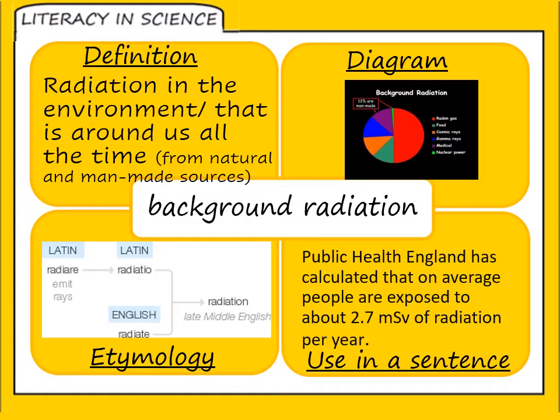As a definition, background radiation is the radiation found in the environment — radiation that is around us all the time. This can be from natural or man-made sources. There are statistics from Public Health England about the average dose of radiation absorbed per year.